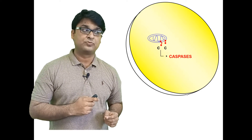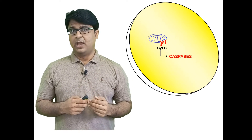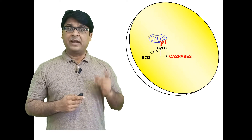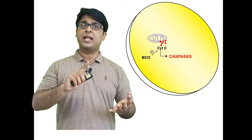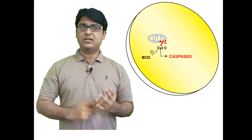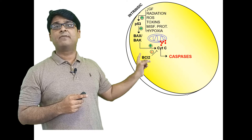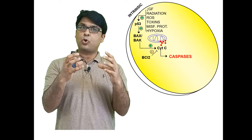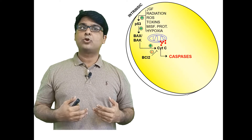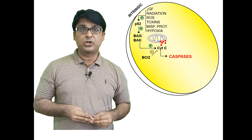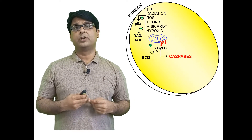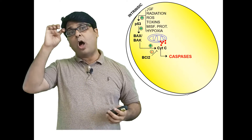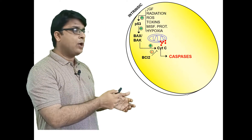To recap: mitochondria contain cytochrome c; cytochrome c activates caspases; BCL-2 normally inhibits cytochrome c release. Any insult to the cell — radiation, hypoxia, infection, toxins, reactive oxygen species — activates p53, which activates Bax and Bak, making the mitochondrial membrane permeable to cytochrome c. Once released, cytochrome c induces caspase activation. Because it involves mitochondria, this is also called the mitochondrial pathway.